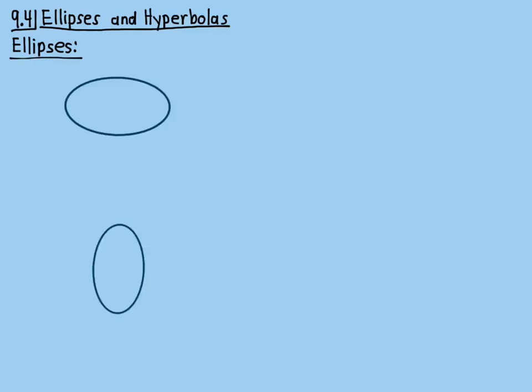So for ellipses, that's what an ellipse looks like. We'll be doing two different orientations, kind of like with the parabolas. There's a horizontal orientation and there's a vertical orientation. The first one has been stretched in the horizontal direction, and in the second one, it's kind of stretched in the vertical direction, elongated.